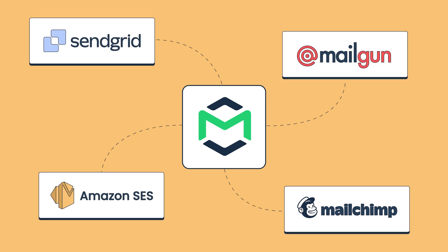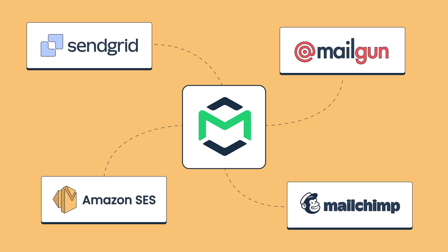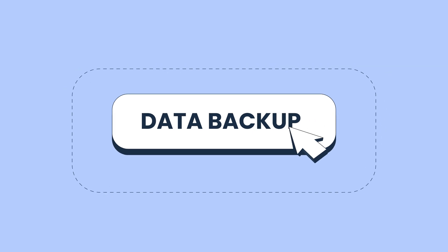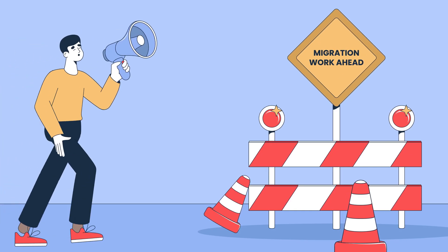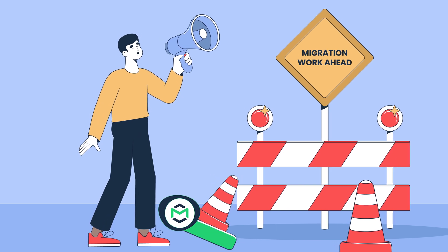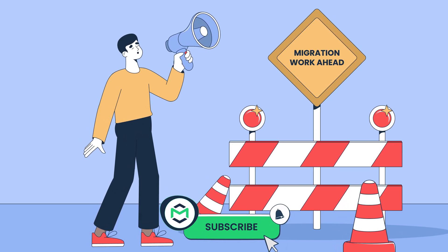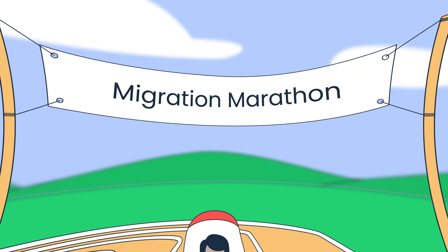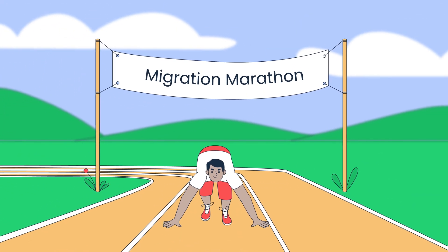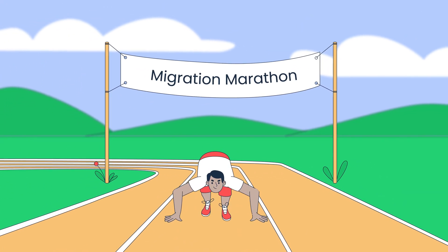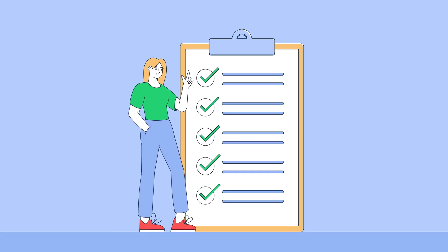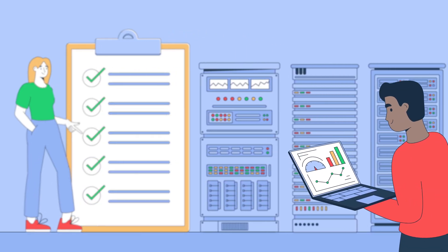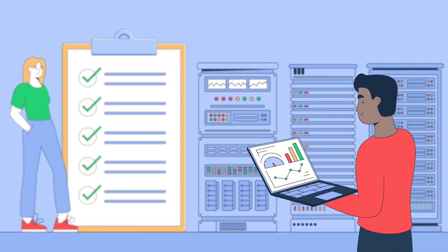Step 3 is a preparatory one, and it involves backing up all critical data. Step 4 is when you finally execute the migration. Once you're ready to kick things off, start with pilot testing a small batch of emails to catch potential issues. If everything looks good, you can proceed with the full migration. However, do remember to keep an eye on performance metrics to identify and fix any problems early.